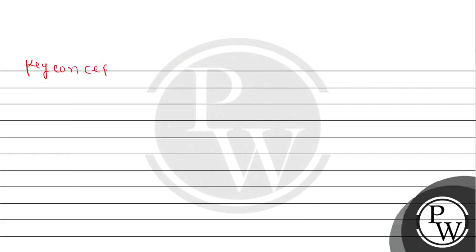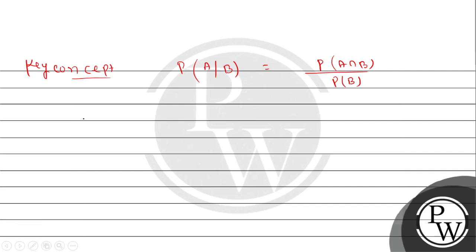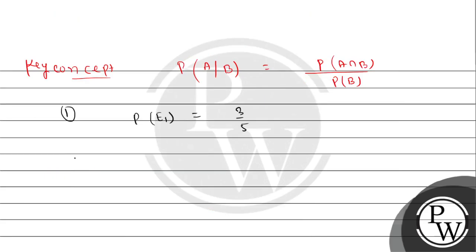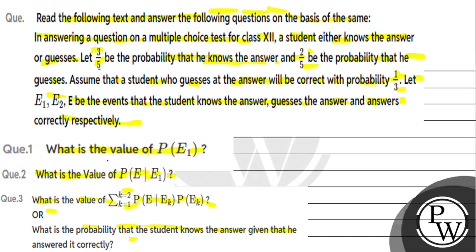We will use conditional probability - probability of event A when B is given. Here our events are E1 and E2. For Part 1, P(E1) is given directly: three by five is the probability that he knows the answer, so P(E1) = 3/5.